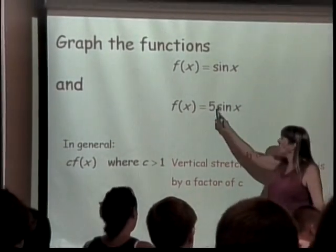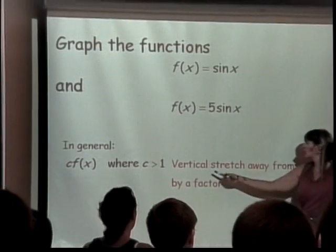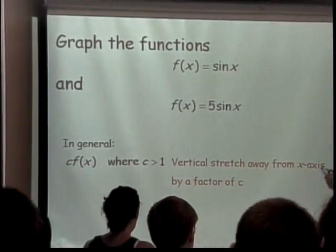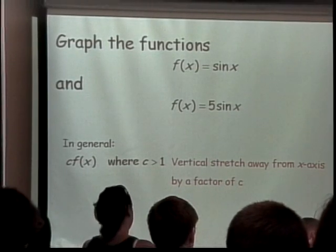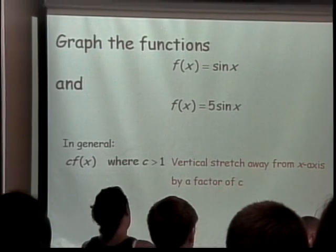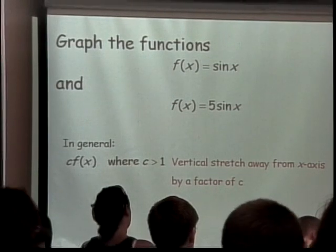So when your number is bigger than 1, it's going to be a vertical stretch and we say it's away from the x-axis because whatever's on the x-axis doesn't go anywhere. Because when you multiply 0 times 5, you don't get any bigger.